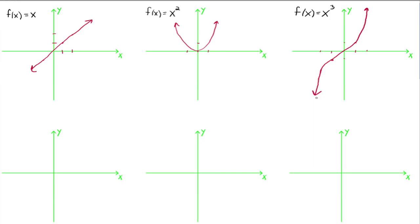For all three of these functions, the domain is all real numbers — all x values are being used. For the range: the identity function's range is all real numbers, it goes forever up and forever down. The cubing function's range is also all real numbers for the same reason. But for the squaring function, the range is from 0 to infinity — those are the only y values being used.